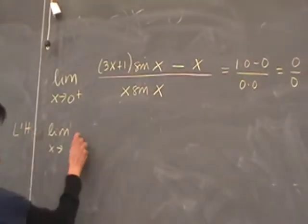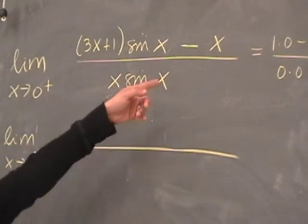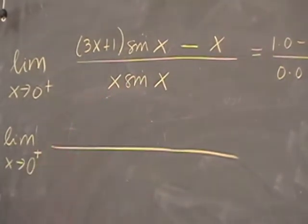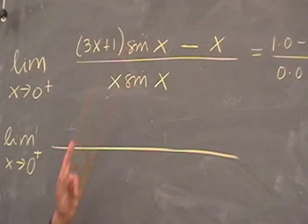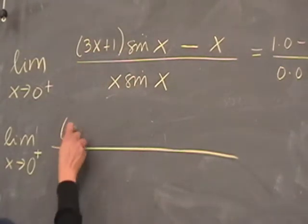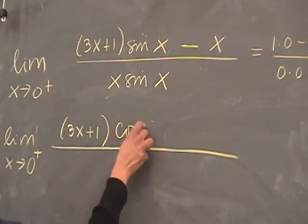So we do L'Hopital's rule, which is simply what? Differentiate numerator, differentiate denominator. Which one do you want to do first? 3 times sine x. This one you can differentiate as a product.